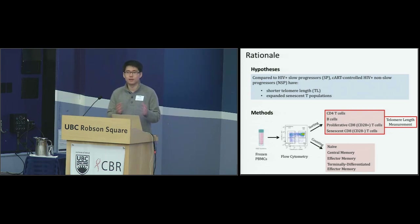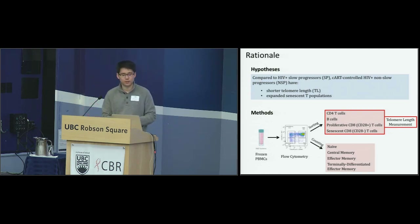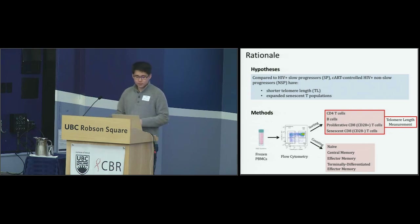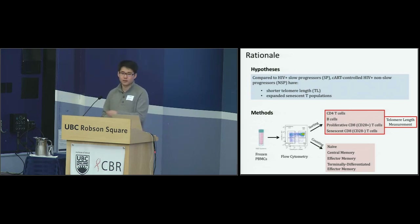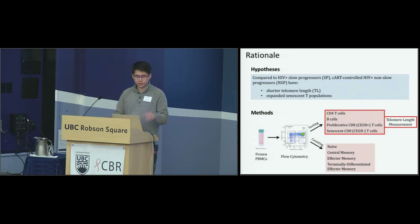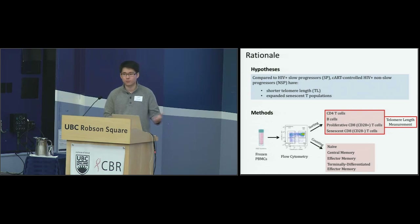Telomere length is a metric for the age of a cell — telomeres shorten with each cell division, so older, more differentiated cells have shorter telomere lengths than naive ones. Senescent cells don't undergo programmed cell death at their end of their differentiation life cycle; they float around being useless and signal for other things. We have frozen PBMCs from HIV-positive slow progressors, non-slow progressors, and HIV-negative groups. We FACS-sorted them for four compartments — CD4, B cells, and the two types of CD8s — and measured telomere length using qPCR within these compartments. The study design is one-to-one-to-one matching between the three groups.